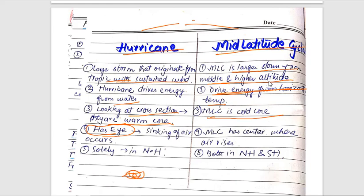In the low-pressure system, sinking of air occurs. In mid-latitude cyclones, the center is where air rises. Both occur in the northern hemisphere, as we have read before.